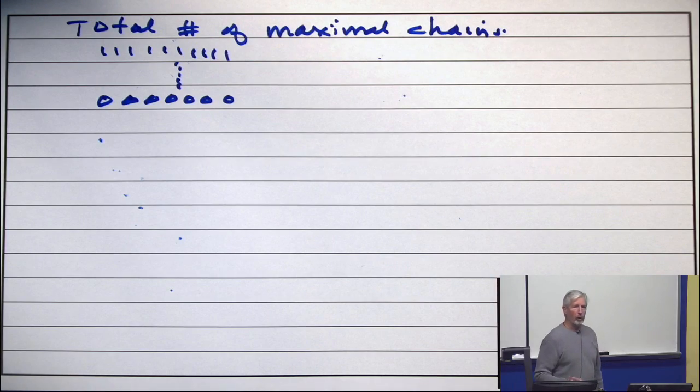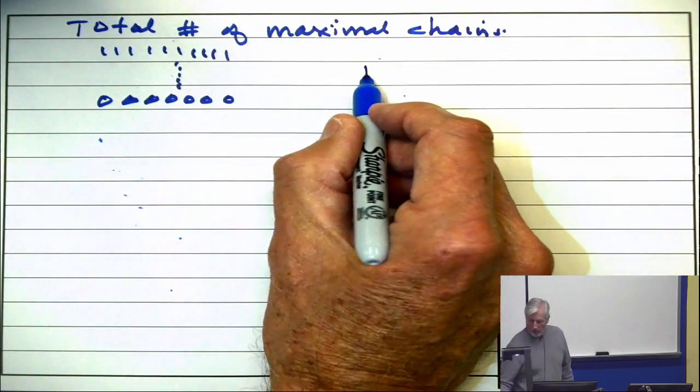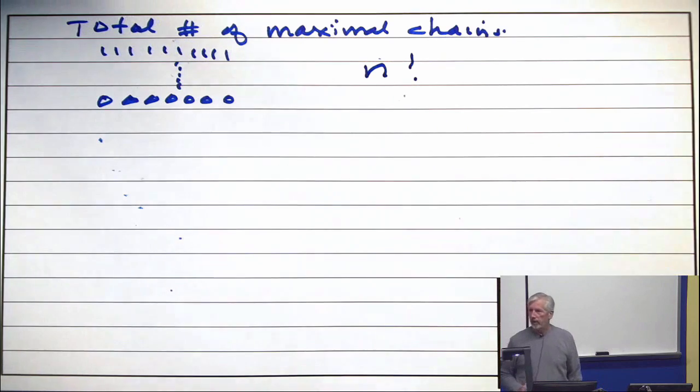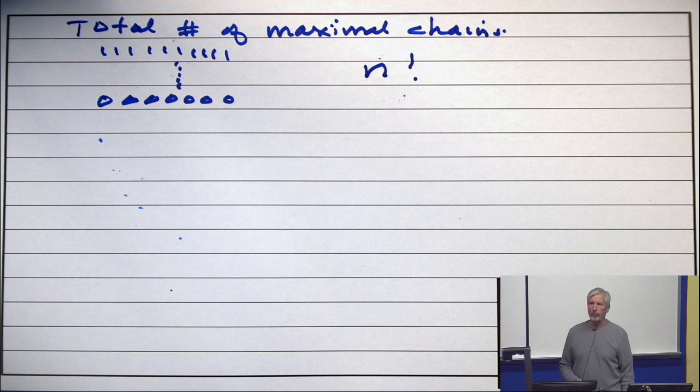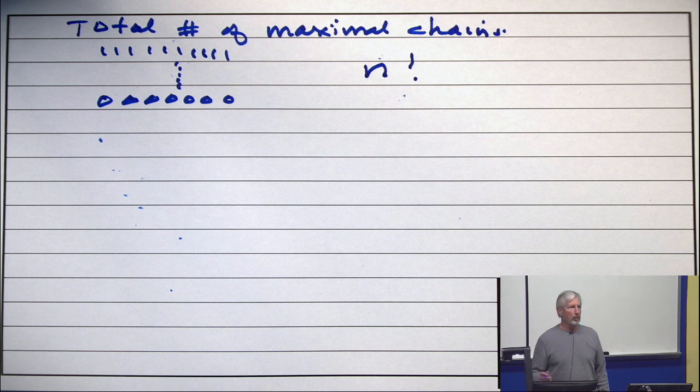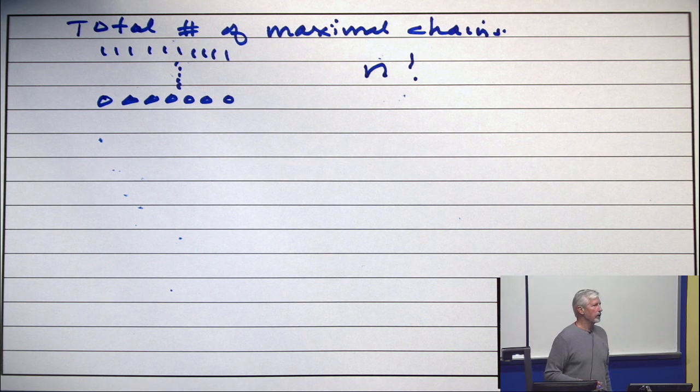n factorial. The total number is clearly n factorial. You're just toggling the zeros to ones in some order. Each one gives you a different maximal chain.